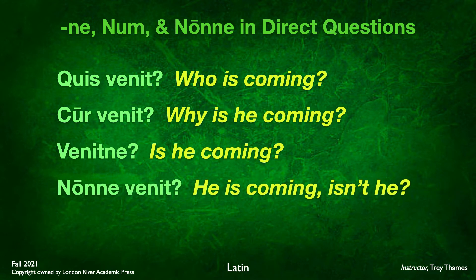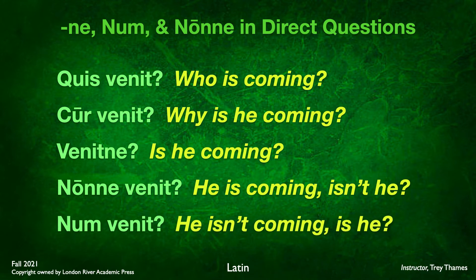In this chapter, we're adding the idea of leading questions — leading the person to give an answer we're expecting, either yes or no. For an expected yes answer, we add nonne at the beginning: 'He is coming, isn't he?' or 'Isn't he coming?' For an expected no answer, we say num venit — 'He isn't coming, is he?' That's how you form interrogative leading direct questions.